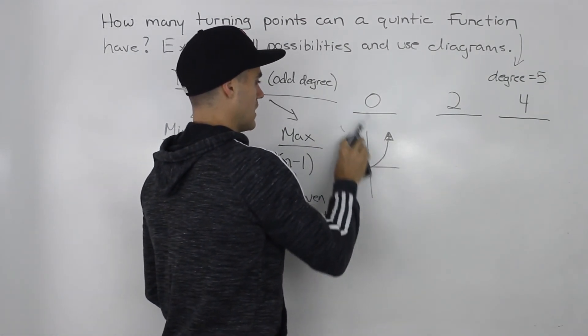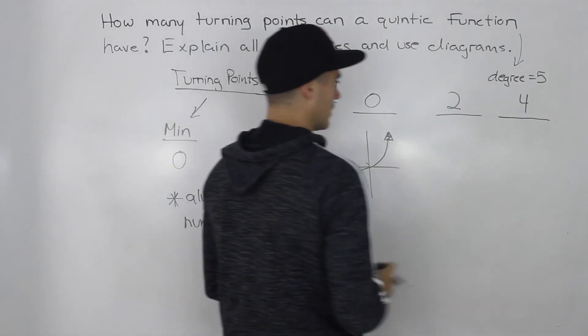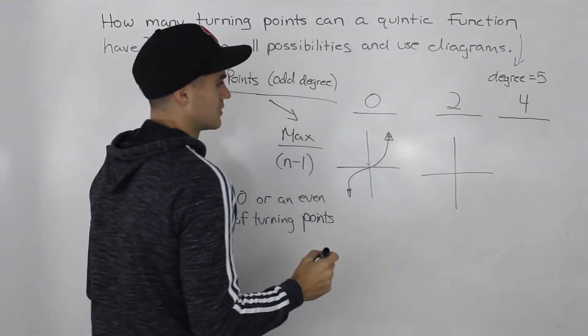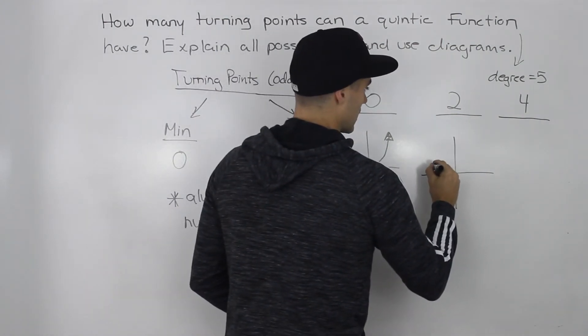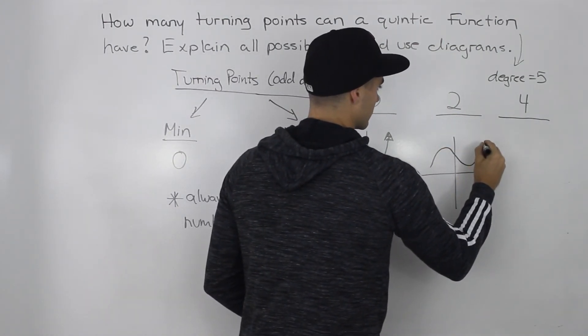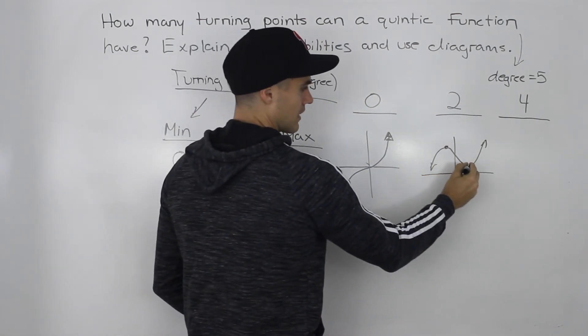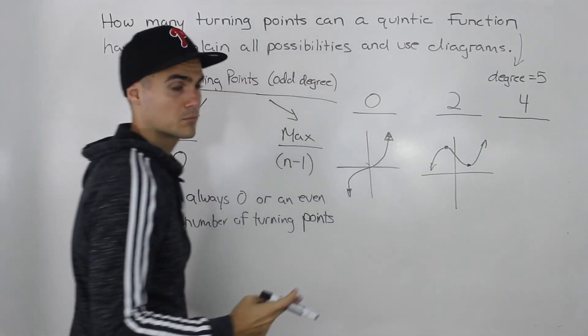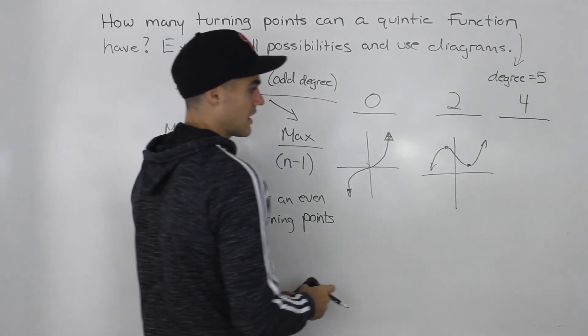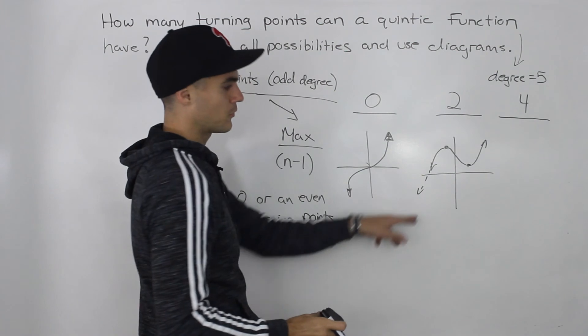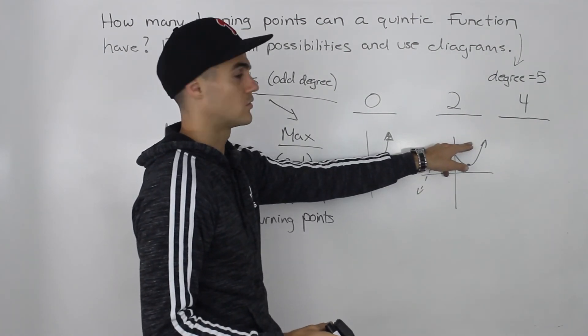What about two turning points for a quintic function? The way that might look is something like this. Notice how it turns here and turns here - two turning points. Notice the end behavior: if we extend this a little bit, it's still from quadrant three to quadrant one.